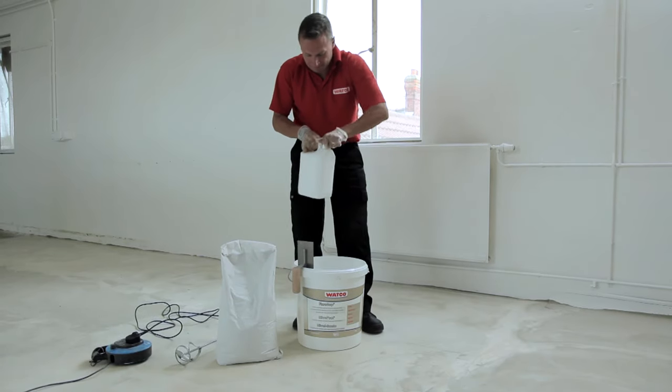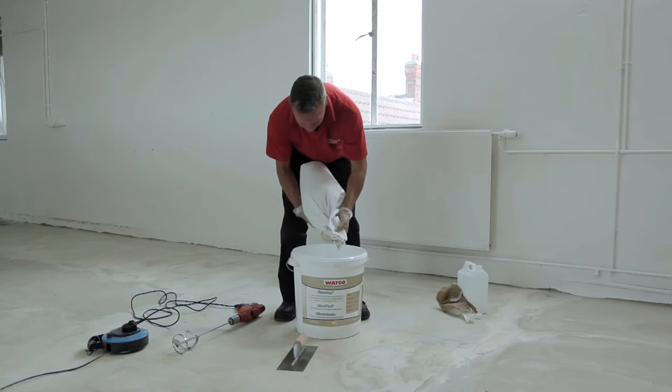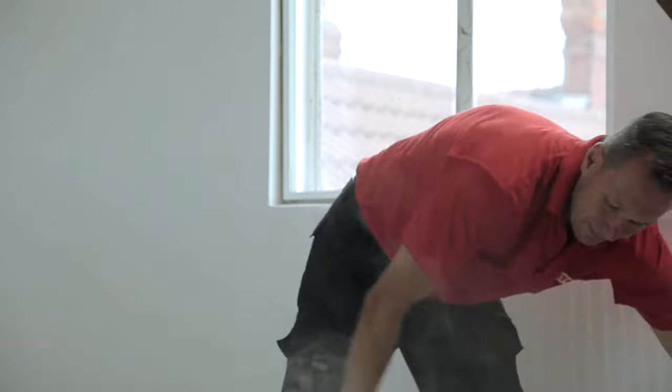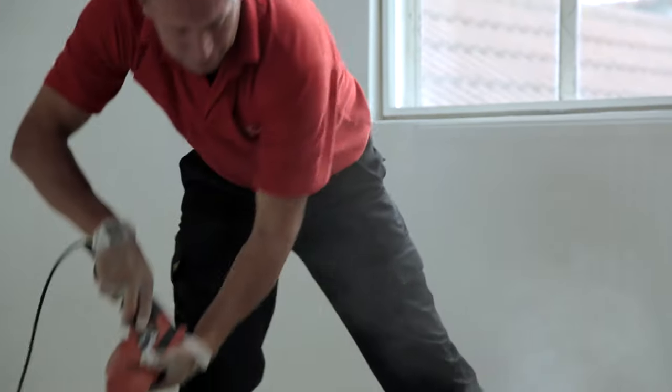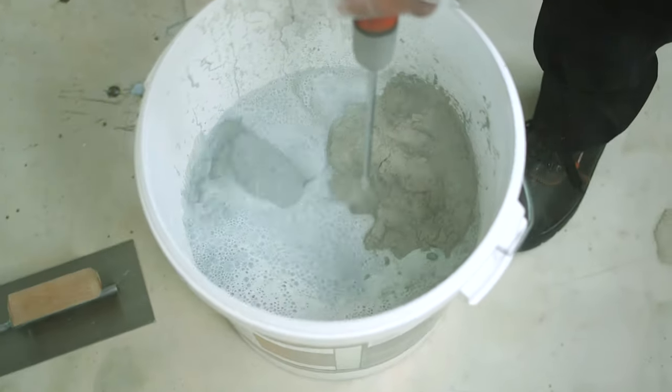As soon as Primer 2 has been applied, you need to begin mixing the Flowtop resin and powder. Empty the resin into the outer container and gradually add the powder, stirring to blend thoroughly and evenly using a slow speed drill fitted with a mixing blade. Mix only one unit at a time.